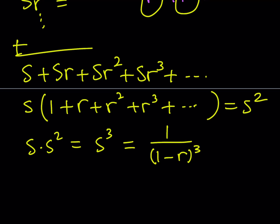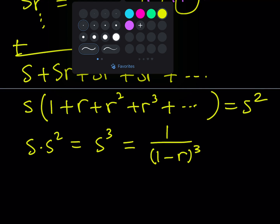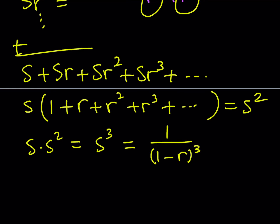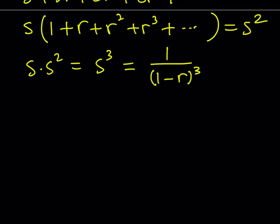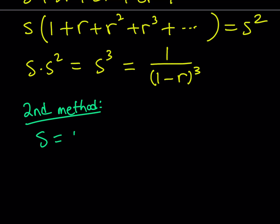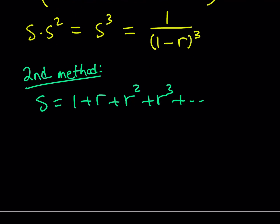That pretty much brings us to the end of this video — but I told you I was going to show you the second way, and let me do it, as promised. The second method is really cool because it involves some calculus. So here's our second method for finding the sum inside the parentheses, which will then be multiplied by S to get the answer. As you know, S is equal to 1 plus r plus r² plus r³ and so on.